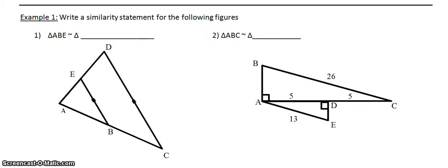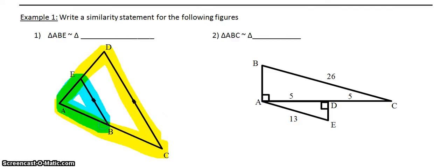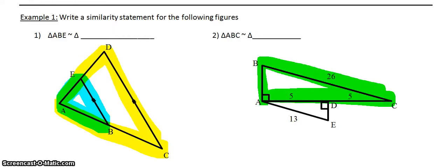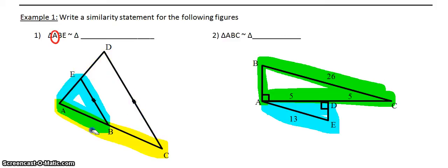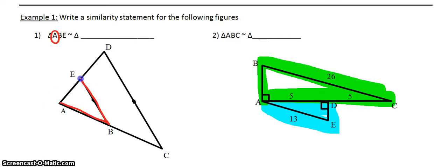There are lots of different ways you can see similar figures. They can be nested inside one another — so you may not see two triangles at first, but there actually are two. There's the big triangle, and we're saying it's similar to the smaller triangle nested inside it. Or they can be separated. Writing a similarity statement is similar to writing a congruent statement, where corresponding parts have to match up. So angle A has to match up with the corresponding angle — order does matter. Triangle ABE is the smaller triangle.